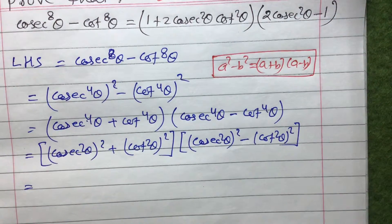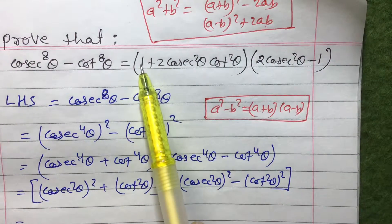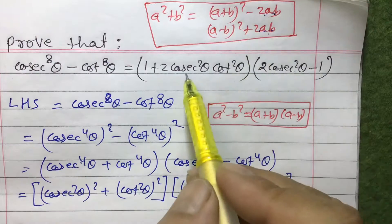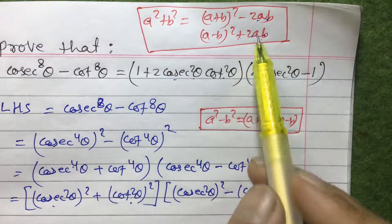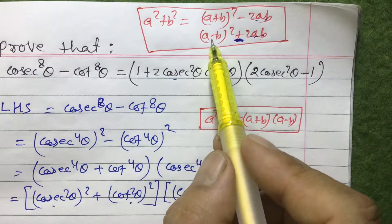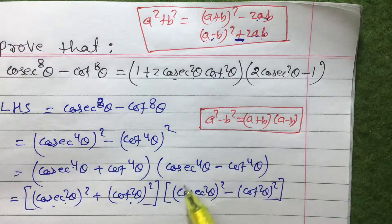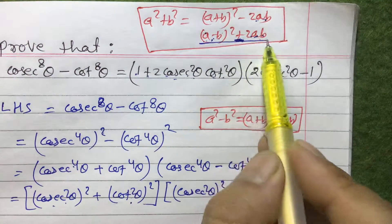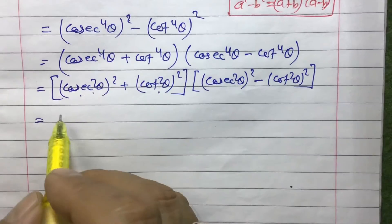Looking at the right-hand side, we need to get 1 and then plus 2 times something. Here a = cosec²θ and b = cot²θ, so 2ab = 2cosec²θ·cot²θ. Since we need a plus sign, we choose the second formula: a² + b² = (a - b)² + 2ab. Also, cosec²θ - cot²θ = 1, which gives us the 1 we need. So the second formula is the right choice.